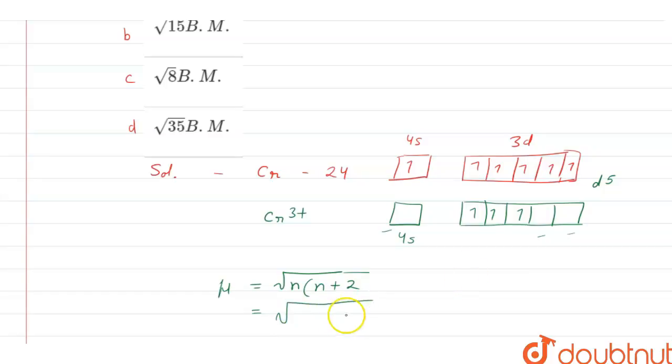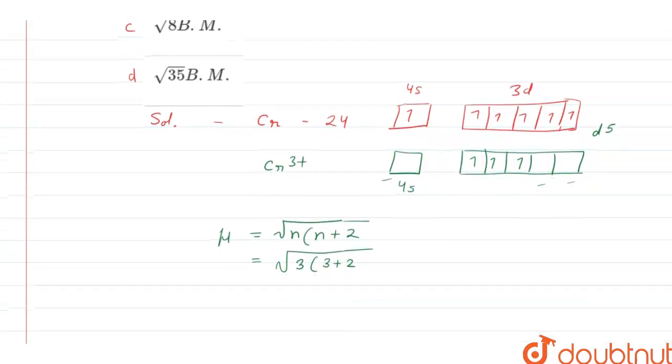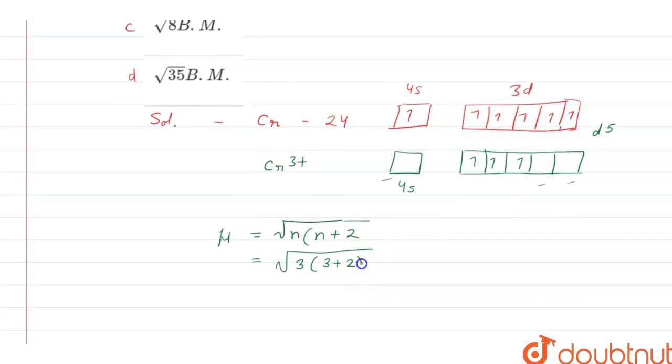So, there are 3 unpaired electrons. So, 3 into 3 plus 2.